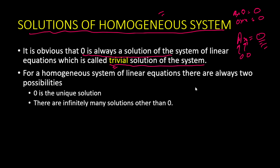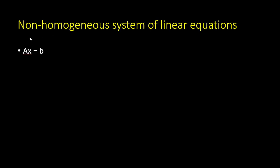The homogeneous system of linear equations always has two possibilities: either zero is the unique solution, or there are infinitely many solutions other than zero.